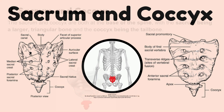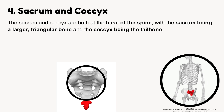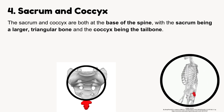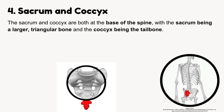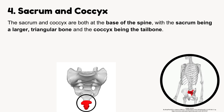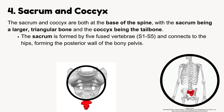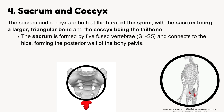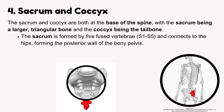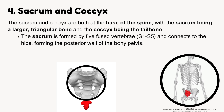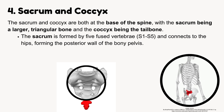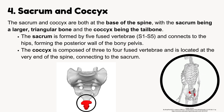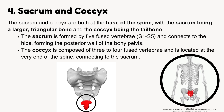Sacrum and coccyx. The sacrum and coccyx are at the base of the spine. The sacrum is a larger, triangular bone. The coccyx is the tailbone. The sacrum is formed by five fused vertebrae, S1 to S5, and connects to the hips, forming the posterior wall of the bony pelvis. The coccyx is composed of three to four fused vertebrae, located at the very end of the spine.